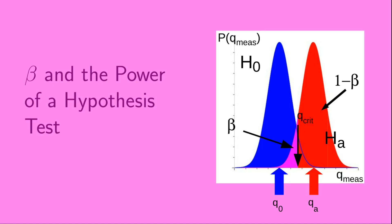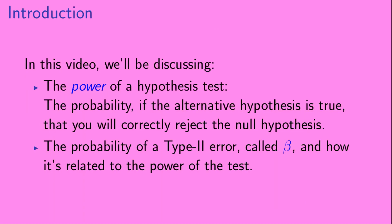Welcome to this video on beta and the power of a hypothesis test. We'll be discussing two things: first, the power of a hypothesis test, which is the probability that — if the alternative hypothesis is true — you will correctly reject the null hypothesis. Toward the end, we'll also discuss the probability of a type 2 error, called beta, and how it relates to the power of the test.